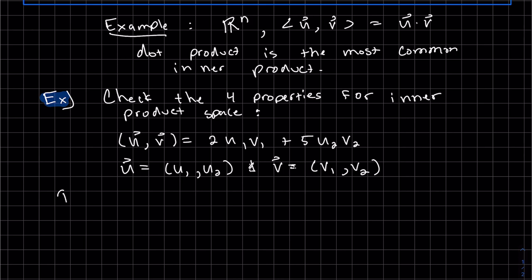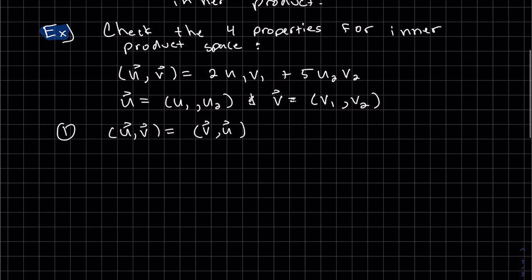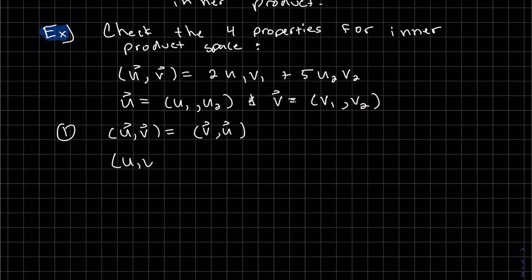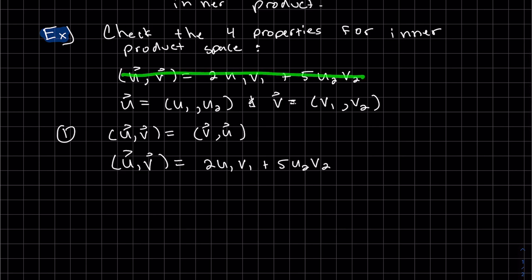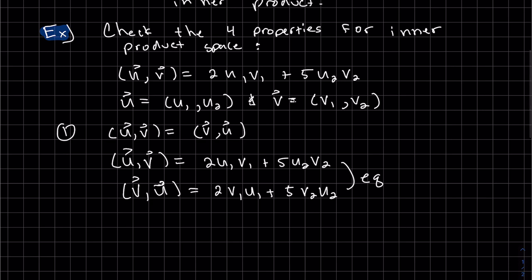So the first property, u v equals v u. So we can just write out both of these and show that they are equal. So we're just literally writing out the definition of what our inner product is. So there's u v. Now let's write out v u. The difference here is since v is first, we put v first. But since these are all scalars, we do know that these are equal because they're real numbers and commutative.